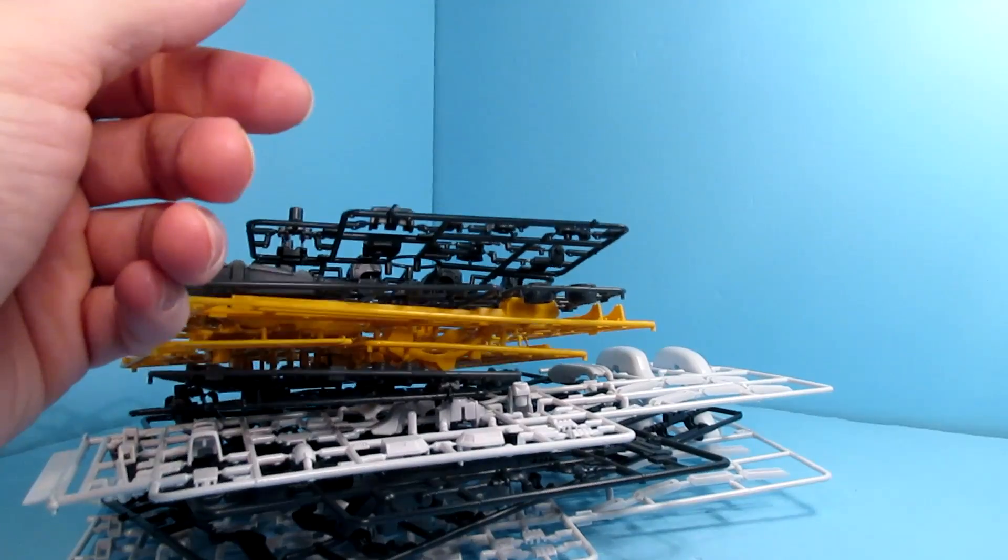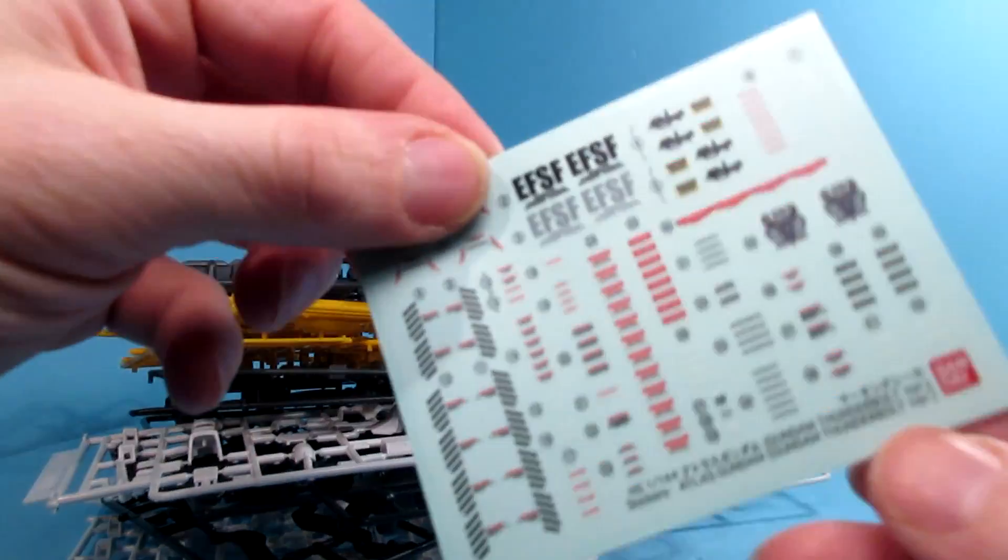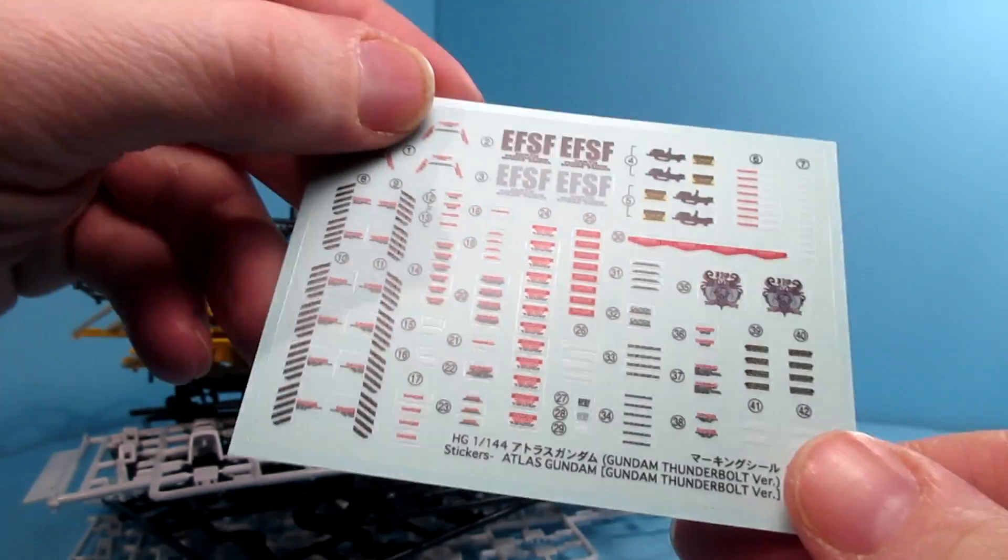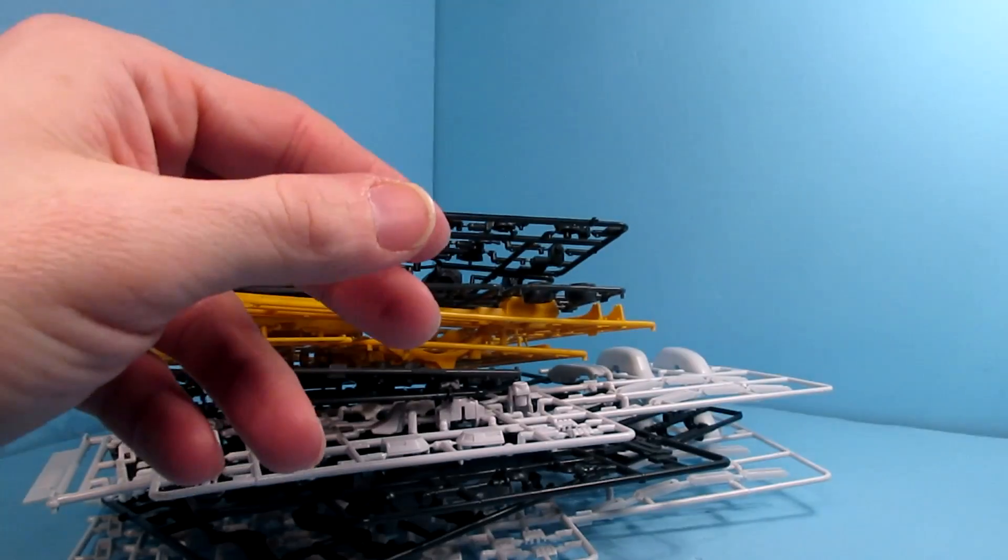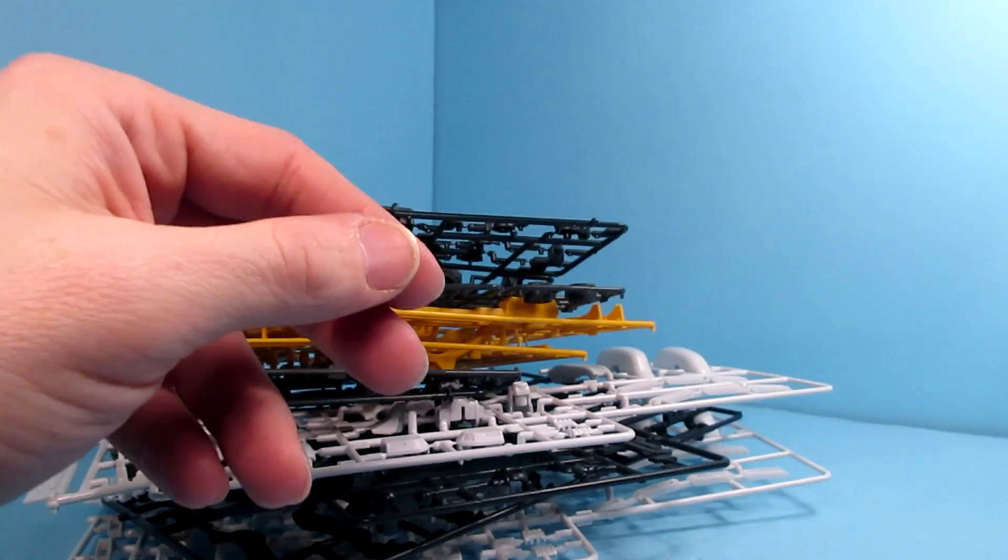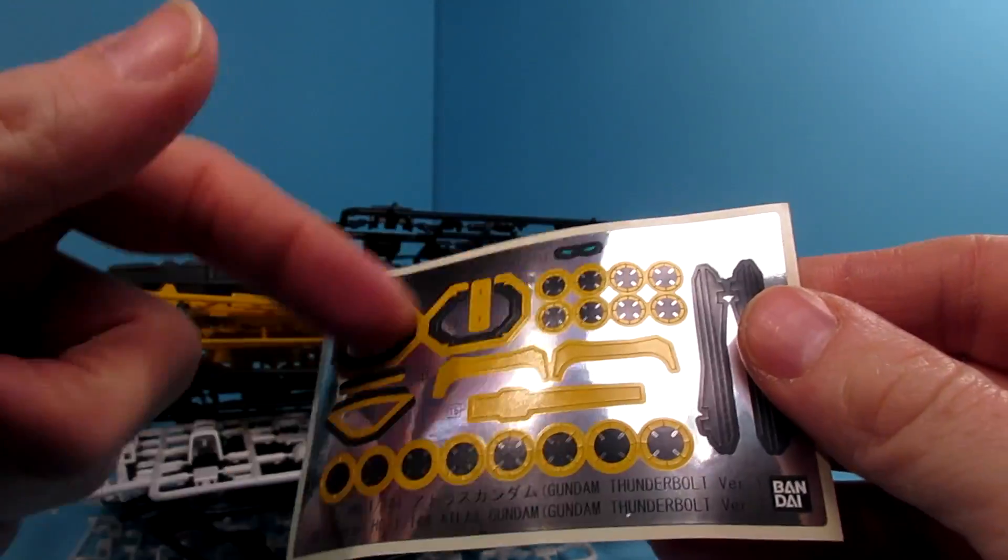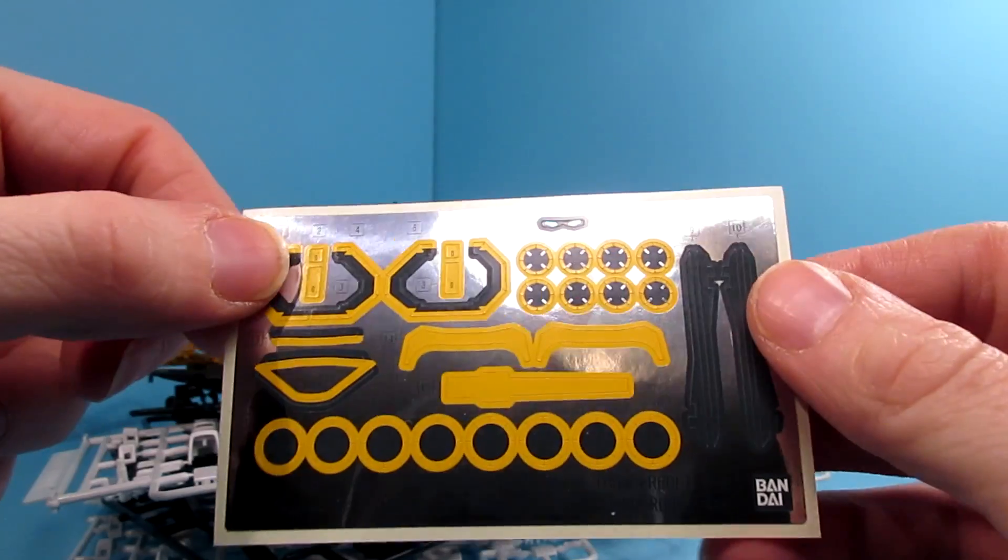And then we do have a lot of marking stickers, which is always good. I'd rather have decals, but you know, if you like to use the stickers, you've got the stickers. And then here are all the foil stickers. Yeah, it is a lot, but like I said, there's a lot of little yellow pieces I just couldn't see.